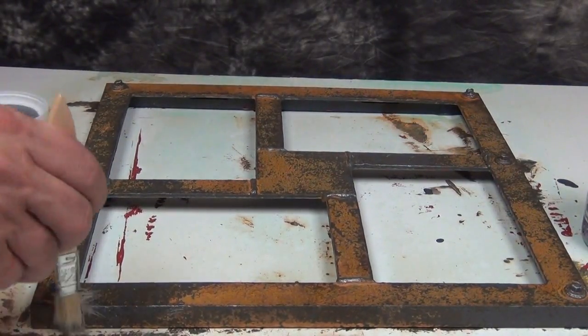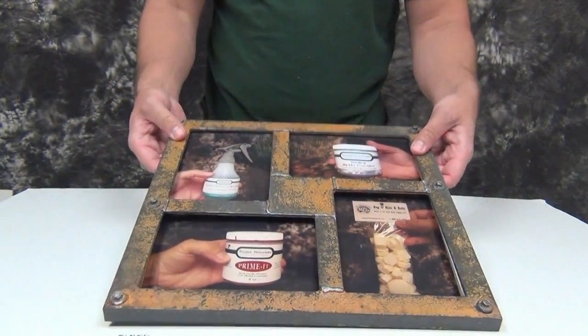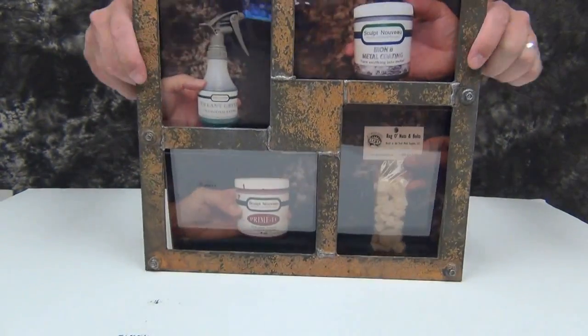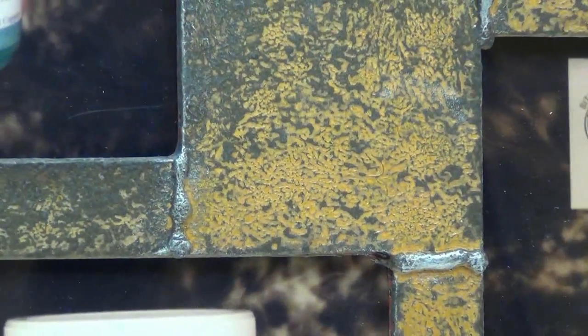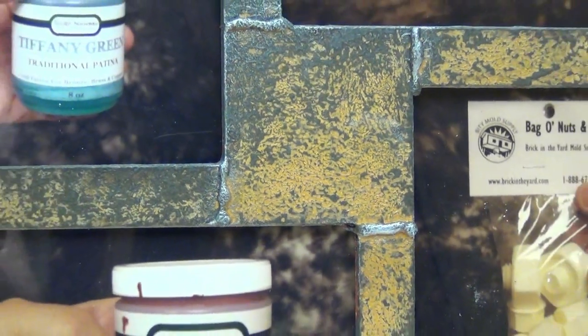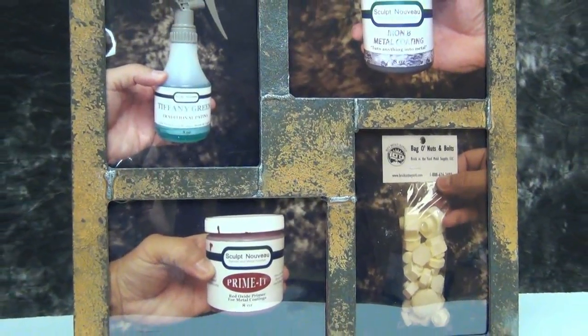Once our frame has dried completely, we're ready to either seal it with some Clear Guard matte or we can leave it as is as a living patina that will change over time. We're ready to put our innards back inside the frame and put it together. There we have our finished rusted metal frame using Iron B, Tiffany Green, and the Primit primer.